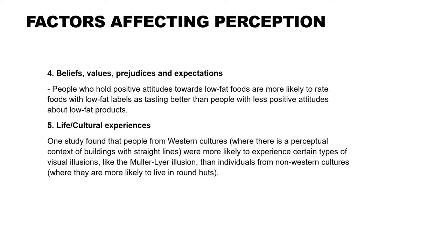For example, people who hold positive attitudes toward low-fat food are more likely to rate foods with low-fat labels as tasting better than people with less positive attitudes about low-fat products. Similarly, someone who is vegetarian might find that food made with beans and vegetables is much more tasty than someone who is not — and this has to do with their own beliefs and values affecting their perception.